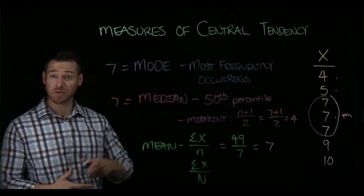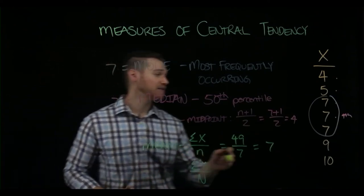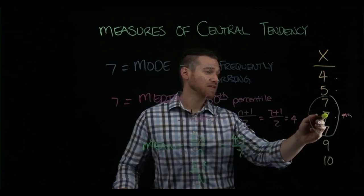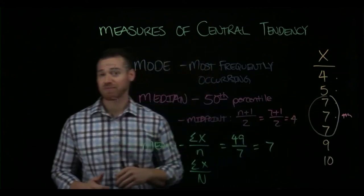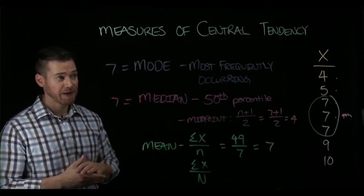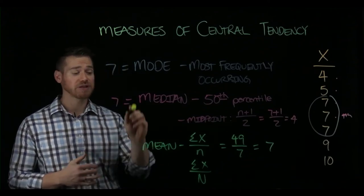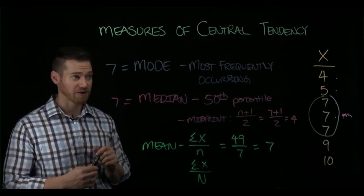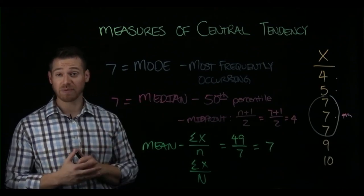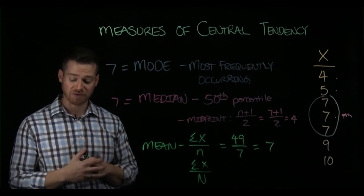And that's because this distribution is symmetrical. We can see that because right around the center of the score, we see that they go down and they go up in the same increments. So this distribution is a symmetrical distribution, and with a symmetrical distribution, the mean, the median, and the mode will all be equal, as they are here. So these are the simple ways that we can calculate the basic measures of central tendency.